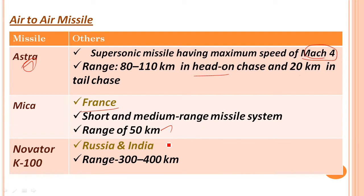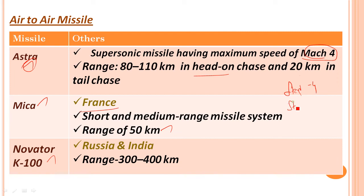Other air-to-air missiles include the Novatar K-100 from Russia, with a range of 300–400 kilometers. France and Russia supply some of these missiles. Air-to-air missiles total 3. So surface-to-surface is 4, surface-to-air is 3, and air-to-air is 3.